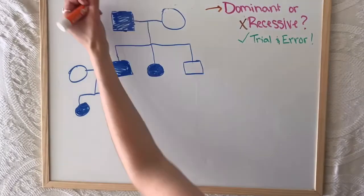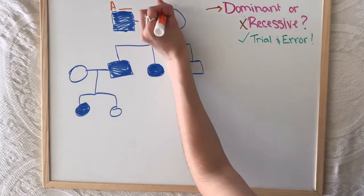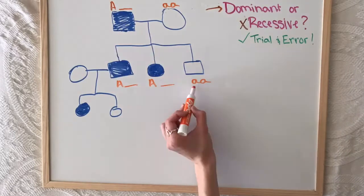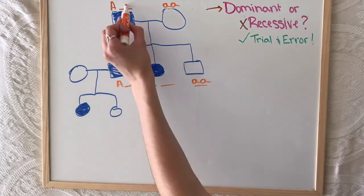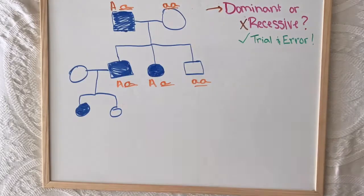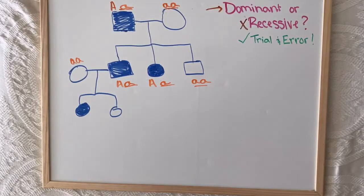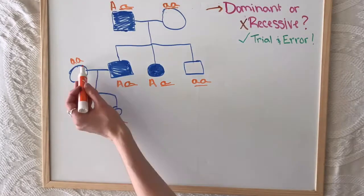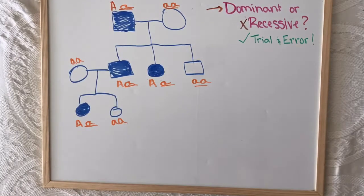So let's check out dominant this time. Again, we'll start filling in alleles. And of course, we have a homozygous recessive child, which means one parent has to be heterozygous and the two children who are affected have to be heterozygous as well. Then the one woman who married into the family is also homozygous recessive and the children are pretty easy to fill in. And since this works, that means the answer is dominant.